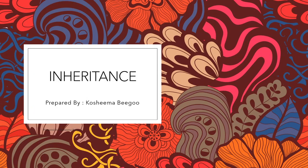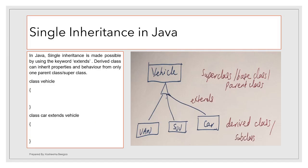Greetings. Today we're going to cover inheritance in Java. When we talk about single inheritance, the key keyword that comes to mind is 'extends'. For example, a class Van is inheriting properties from a class Vehicle — it's inheriting properties and behavior from exactly one superclass. This is known as single inheritance.